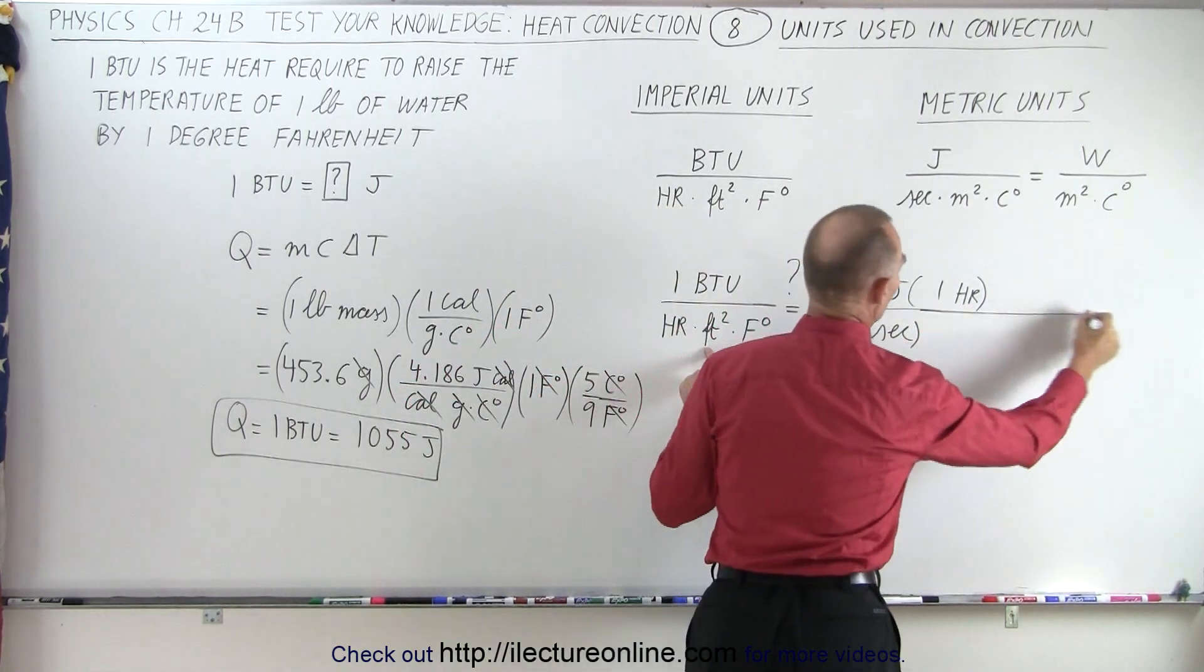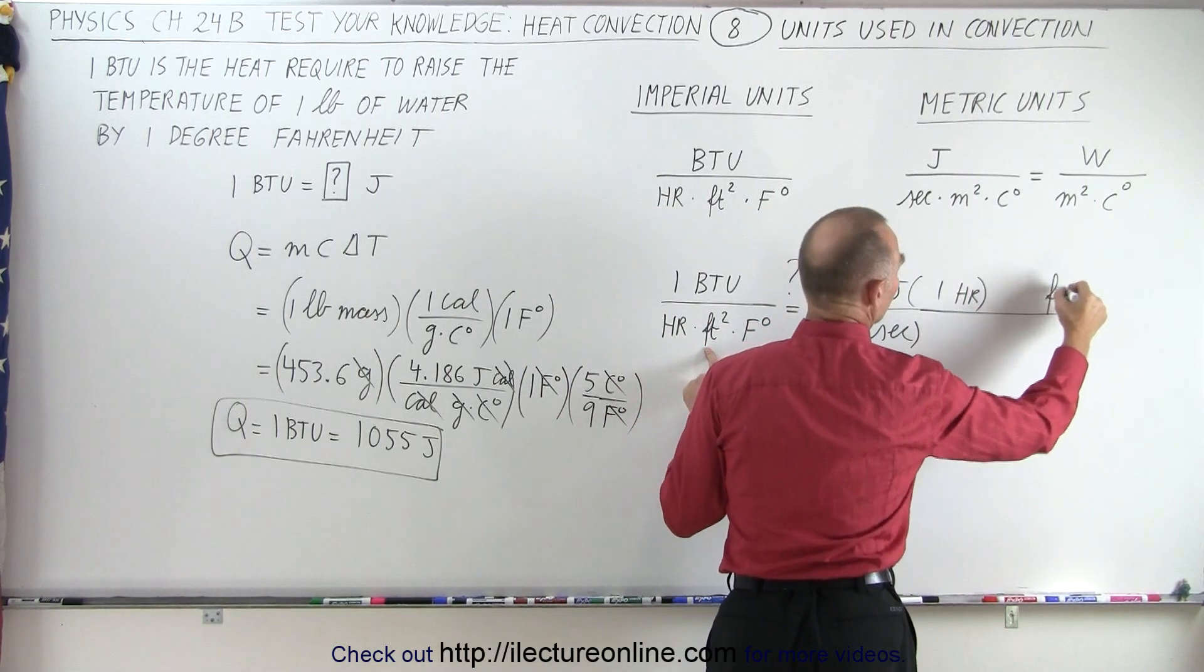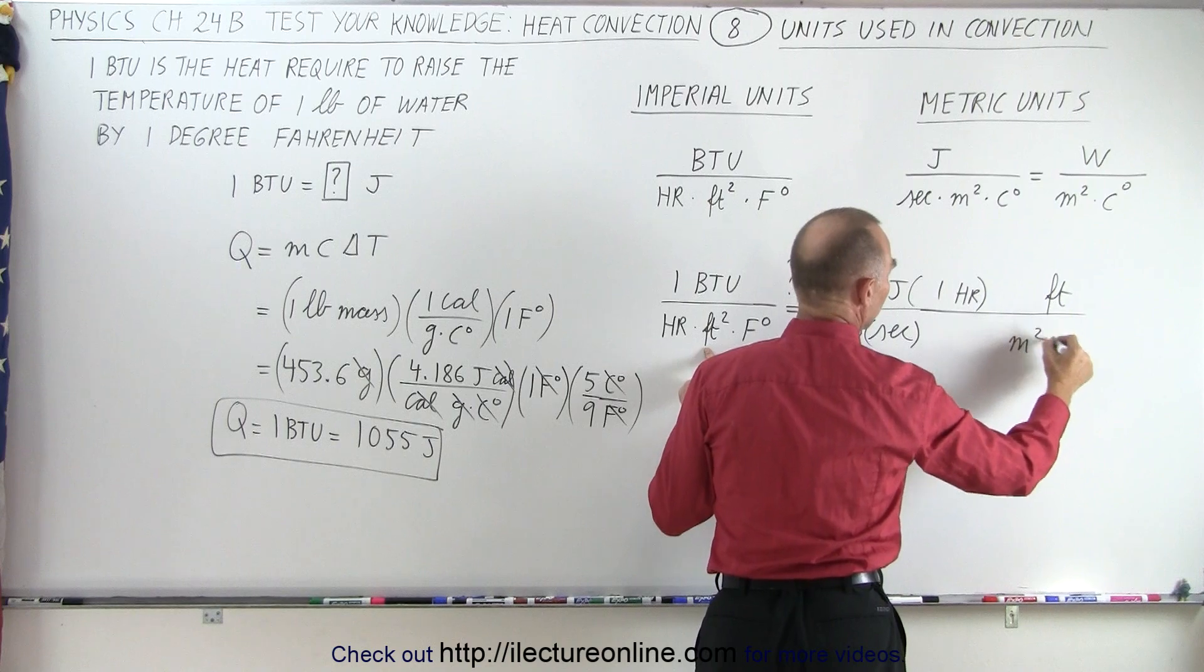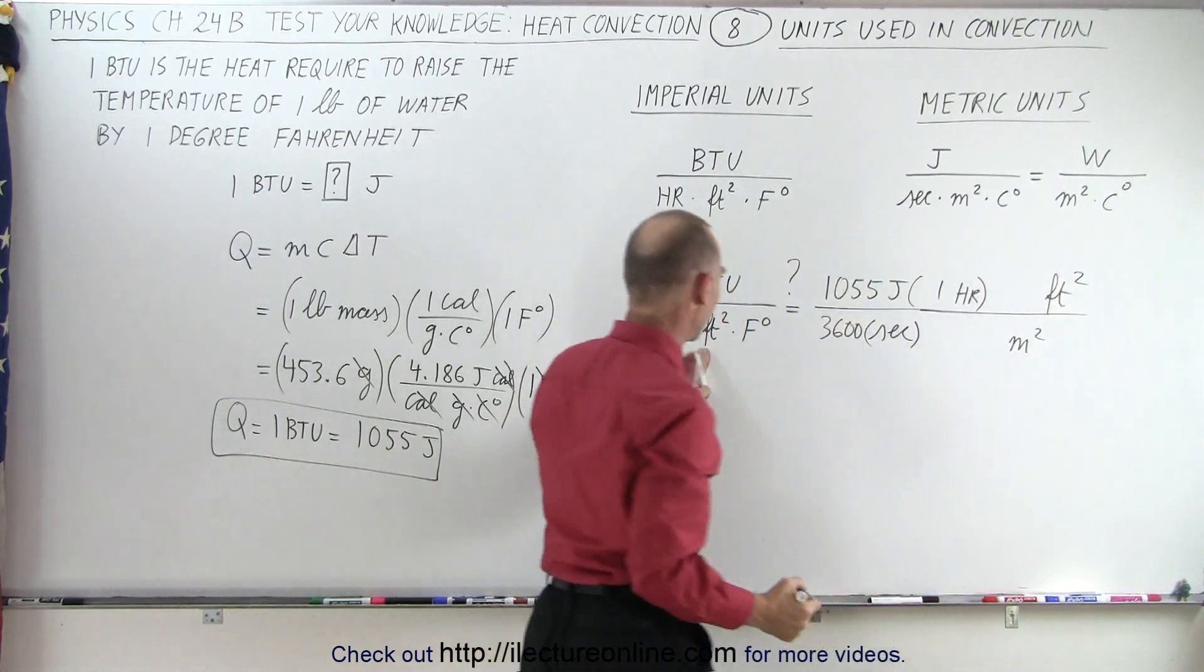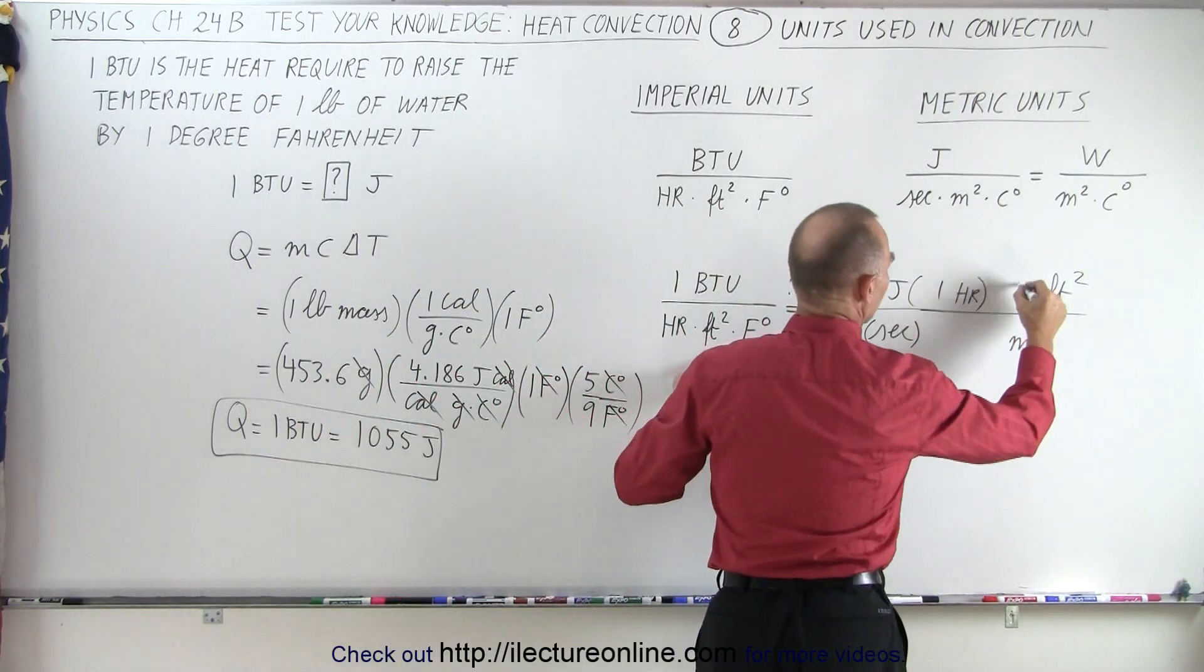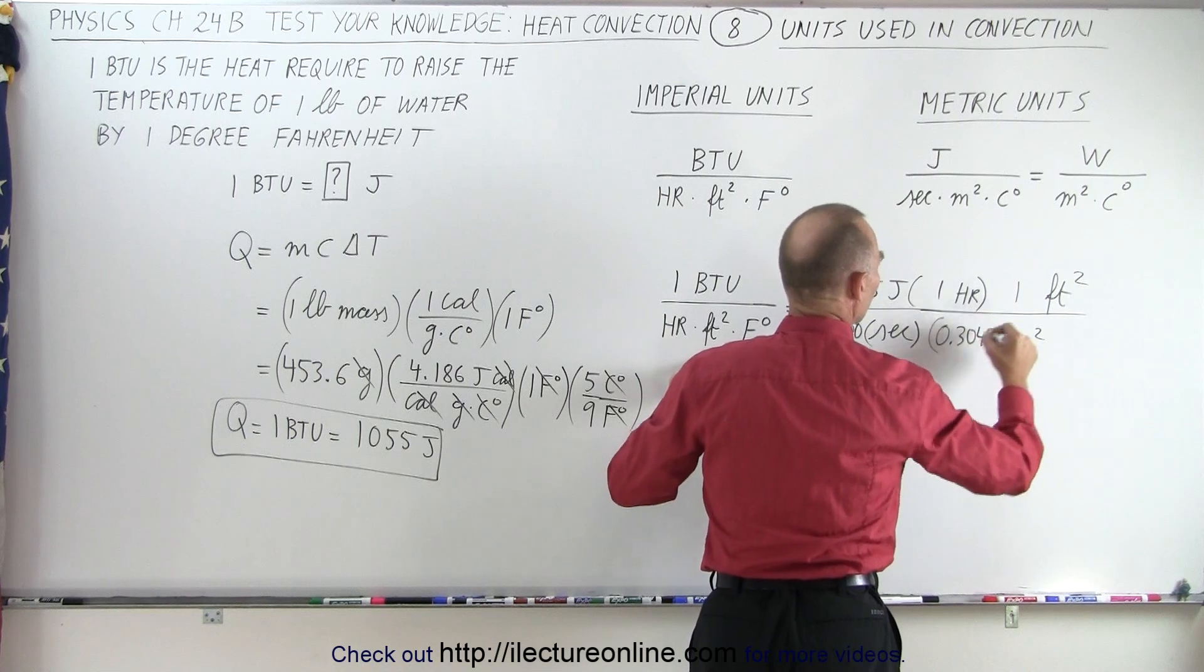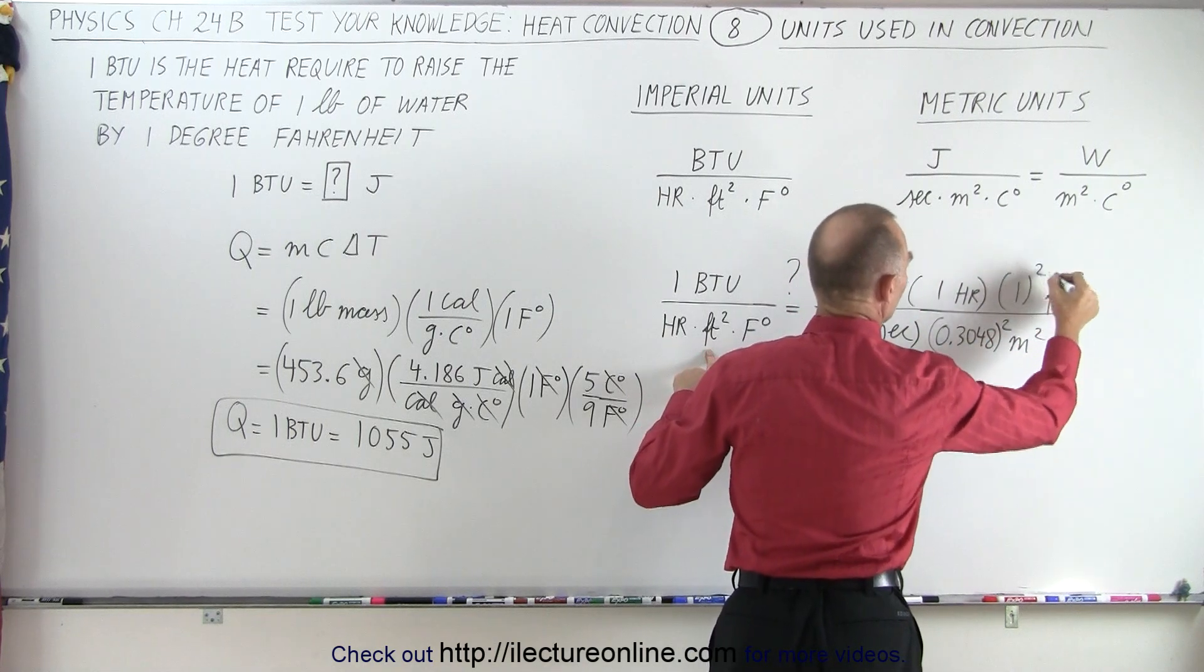Now I need to convert to meters squared. So I need feet squared in the numerator and meters squared in the denominator. Now one foot is 0.3048 meters, so we need to square those.